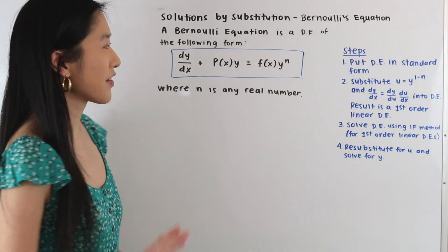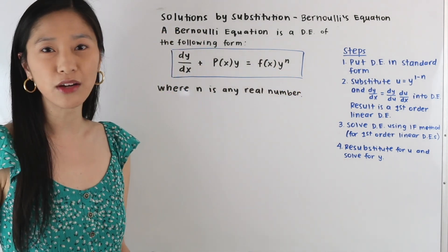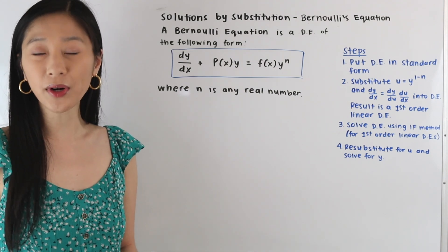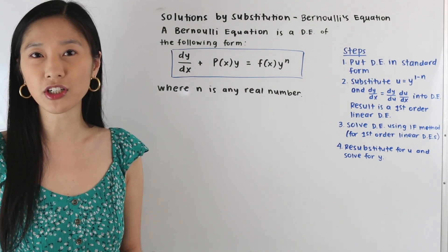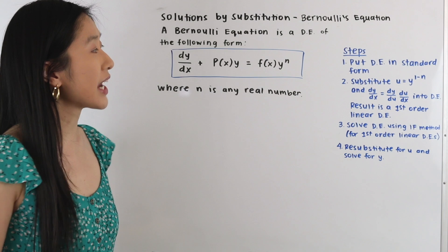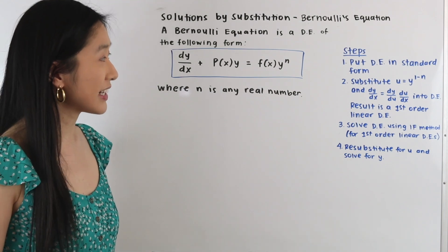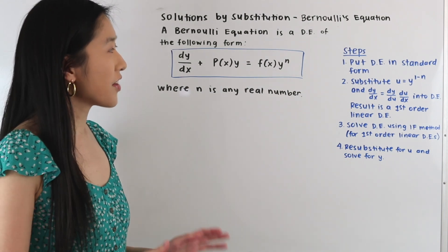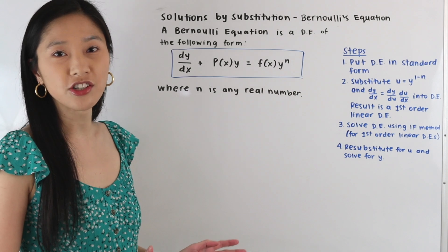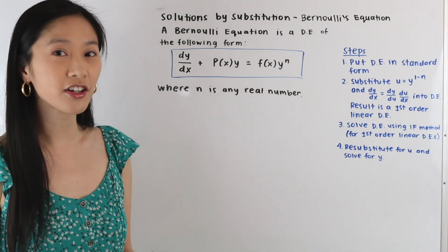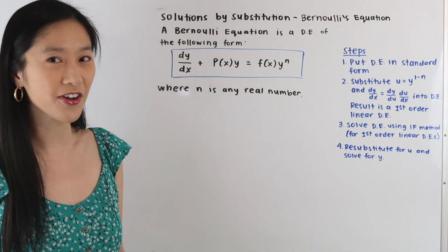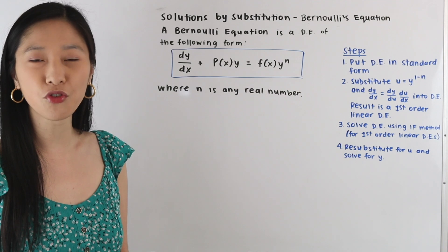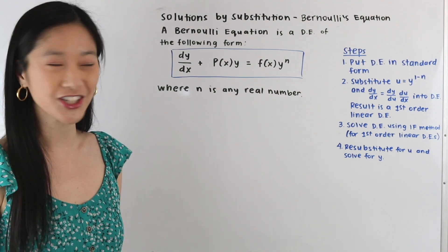So if we could just get rid of this y to the n, we would know how to solve this differential equation. What we're going to do is perform a substitution to get rid of this nonlinearity and reduce this nonlinear differential equation into a linear differential equation that we do know how to solve. So let's go over the steps we need to perform when solving a Bernoulli equation.